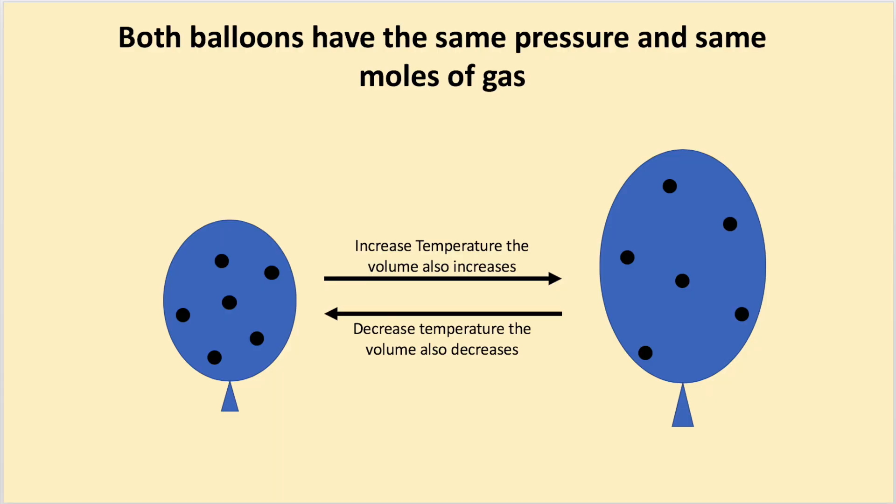They saw that temperature and volume were directly proportional to each other and as you increase temperature, the volume also increased and vice versa. For example, if you have a balloon and you increase the temperature, the gas molecules are going to move faster and increase the volume of the balloon. Also remember, in order for the number of moles and pressure to stay constant, the volume has to increase to keep the number of gas collisions constant.